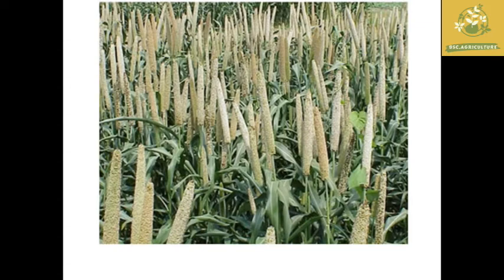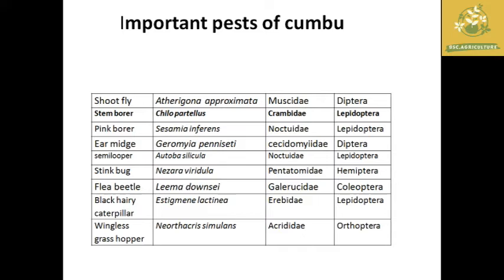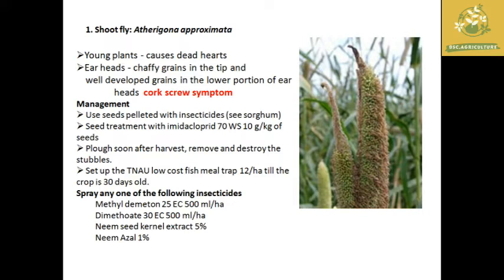Next, we are going to see about the pests of kambu. The important pests of kambu are listed in this table. The first pest is the shoot fly, Atherigona approximata. The symptoms are that younger plants develop dead hearts. In the adult stage, the earheads have chaffy grains at the tip and well-developed grains in the lower portion show a corkscrew symptom, where grains are converted into feathery-like structures. Management includes plowing after harvest, removal and destruction of stubbles, use of insecticide-coated seed pellets, placing TNAU low-cost fish meal traps at 12 per hectare at the 30-day-old kambu plant stage, or spraying neem seed kernel extract, neem oil 1% extract, Methyl Demeton, or Dimethoate 30 EC.